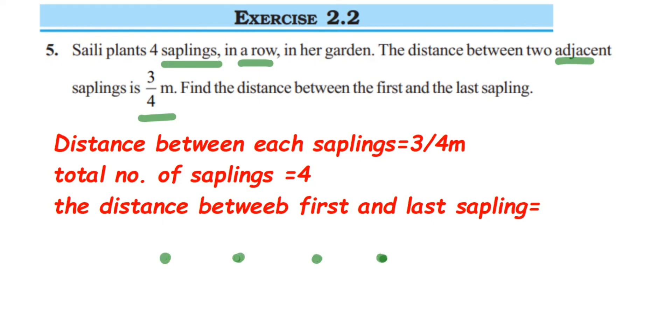We have here, this is 1 3 by 4 meter distance. This is again 3 by 4 and this is 3 by 4. You can see there are only 3 gaps present. Though the saplings are 4, the gap is only 3.